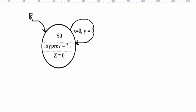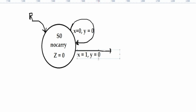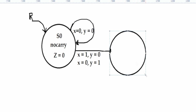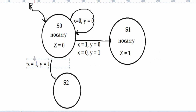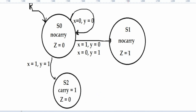We can define S0 as the 'no carry' state with 0 output. Then, if x=1 and y=0, or vice versa (x=0 and y=1), we enter a new state named S1, in which there is no carry but the output will be 1, because 0 plus 1 or 1 plus 0 is 1. The last case is when both x and y equal 1. The output must be 10 in binary, but since the output is only 1 bit, the output will be 0, but there is a carry. We must repeat this for all possible states to obtain the final diagram.